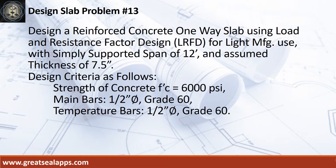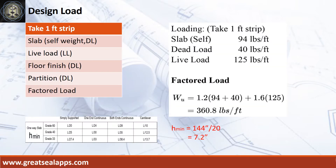Strength of concrete: 6,000 psi. Main bars: half-inch diameter, grade 60. Temperature bars: half-inch diameter, grade 60. The uniform load for a 7.5-inch thick slab is 94 pounds per foot. Light manufacturing live load is 125 pounds per foot. Other dead load — including floor finish and partition — is 40 pounds per foot, for a total factored load of 360.8 pounds per foot.